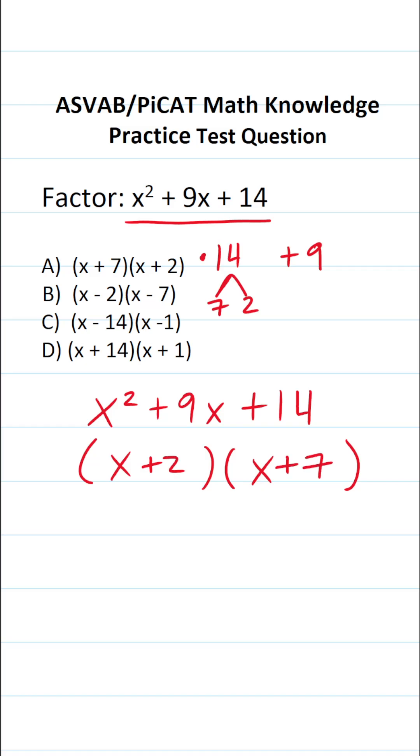So just like that, we factored this one. The correct answer, as you can see, is A. That said, if you want to check your work, you can always take that which you factored and multiply it out using the FOIL method.